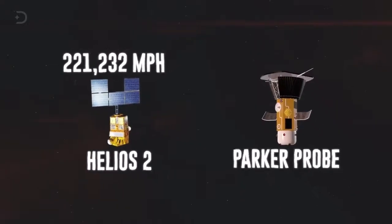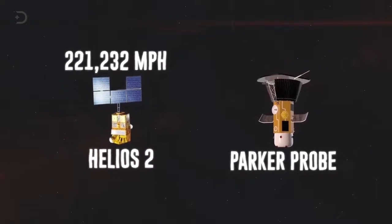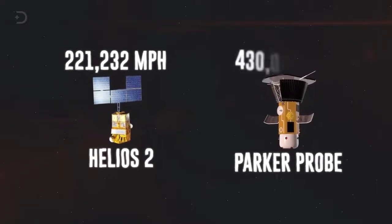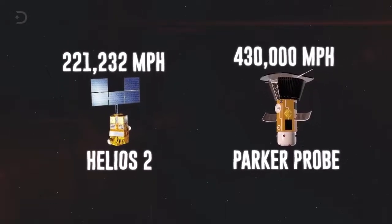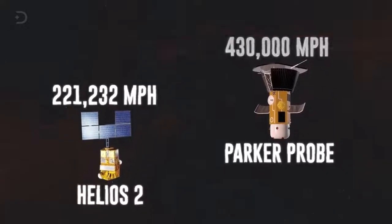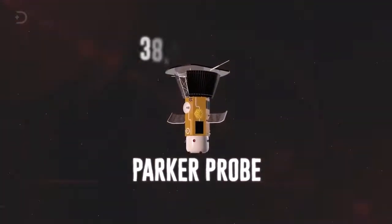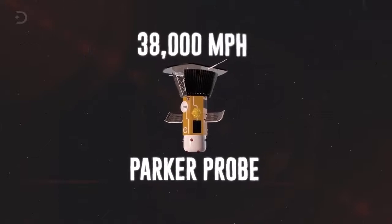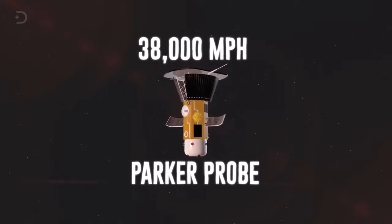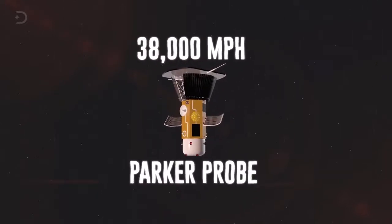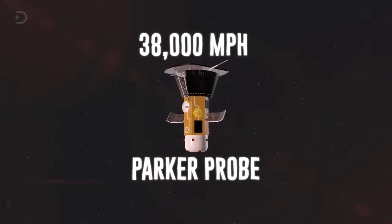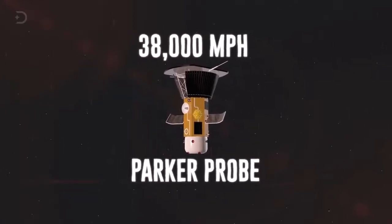But the Parker probe, on its final orbit, will be hurtling around our star at an astounding 430,000 miles per hour. However, it's currently traveling at 38,000 miles per hour, which is less than 10% of its peak speed. But in the end, it will be going so fast that it will leave other spacecraft eating metaphorical dust.